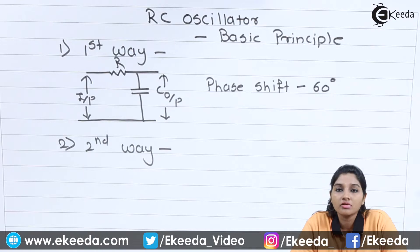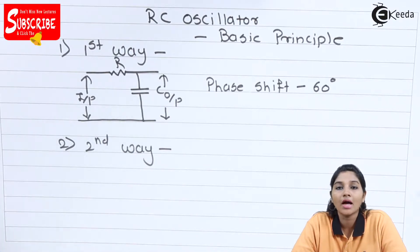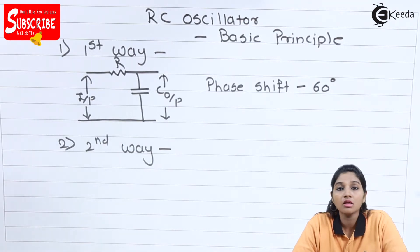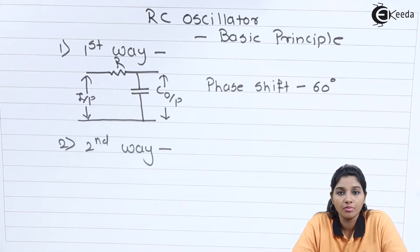If we consider transistor as an amplifier and if we apply fraction of output signal back to the input without considering the phase shift, then it acts as an amplifier only but with the negative feedback. But in case of oscillator, we require positive feedback. Therefore, this positive feedback can be achieved by using two ways.